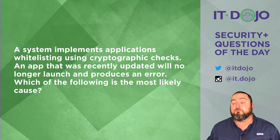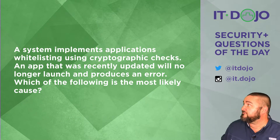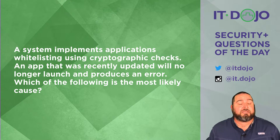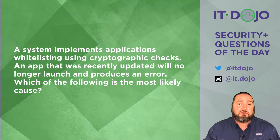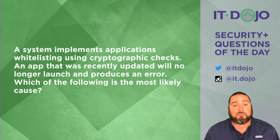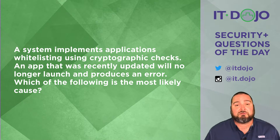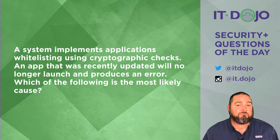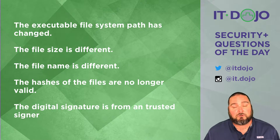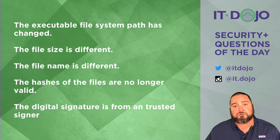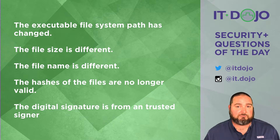Here comes question number two. You've got a system that implements application whitelisting by using cryptographic checks. A program that had been working previously has been updated and now suddenly doesn't work anymore. Given these answer choices, which of them is likely to be the reason why? Go ahead and click on pause if you need to, read those answer choices, then click play and we can break each answer choice down.